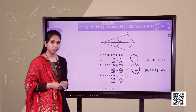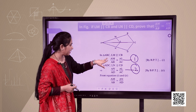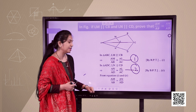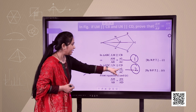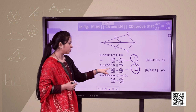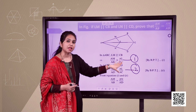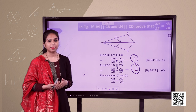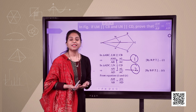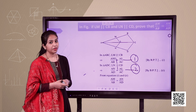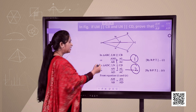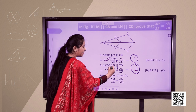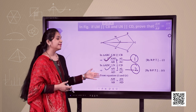Carefully observe equations 1 and 2. We have AM upon AB equals AL upon AC, and AL upon AC equals AN upon ND. Since two things are equal to the same thing, from equations 1 and 2 we can write AM upon AB equals AN upon AD. Hence proved.